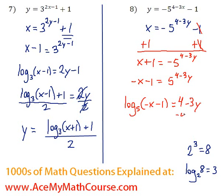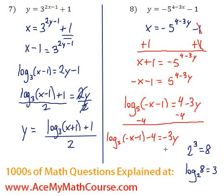Now let's subtract 4 from both sides of the equation, so we get log base 5 of (negative x minus 1) minus 4 equals negative 3y. Then we divide both sides by negative 3, and we're done. So y equals log base 5 of (negative x minus 1) divided by negative 3.